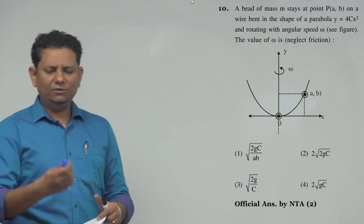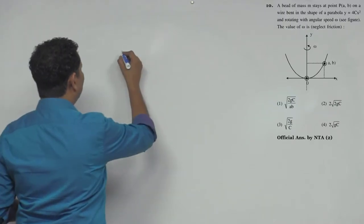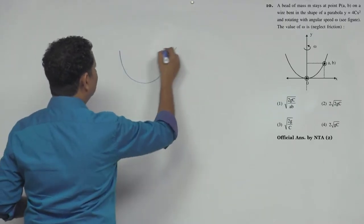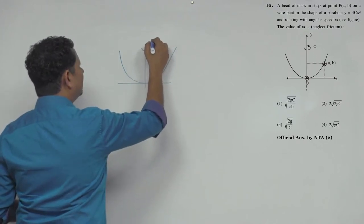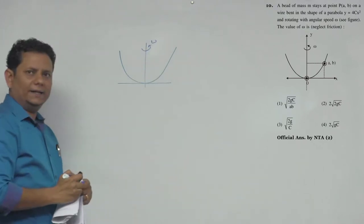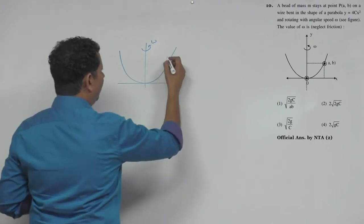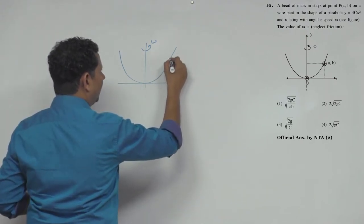We can neglect friction. The scenario is: there is a wire bent into a parabolic shape, and this wire is rotating with angular velocity ω. There is a bead on it, and there is no friction.